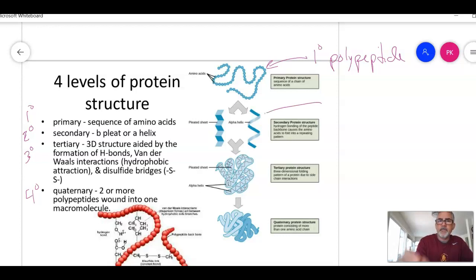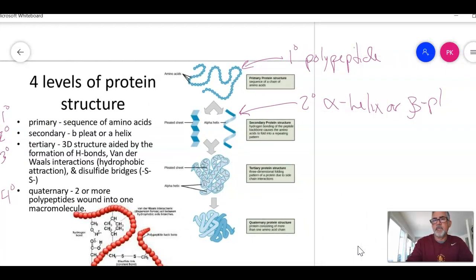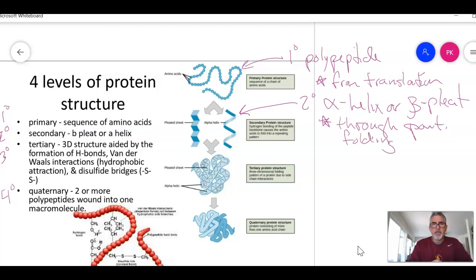The next structure, the secondary structure, will be an alpha helix or a beta pleat. So this is through spontaneous folding. This is from translation, and this secondary structure is through spontaneous folding and hydrogen bonds.